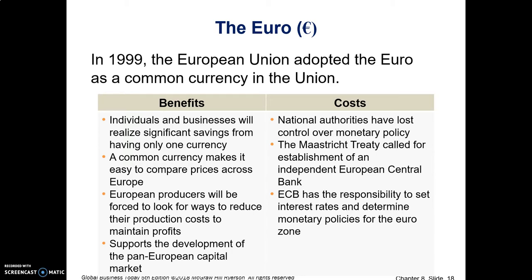Reducing production costs can make businesses more efficient. Some of the costs of having a common currency in Europe is that national authorities — each country — have lost control over their own monetary policy. Germany can't do something it wants to do because Greece, for example, is having significant economic problems. Each country would have the desire for a different monetary policy, but the European Union has one monetary policy.